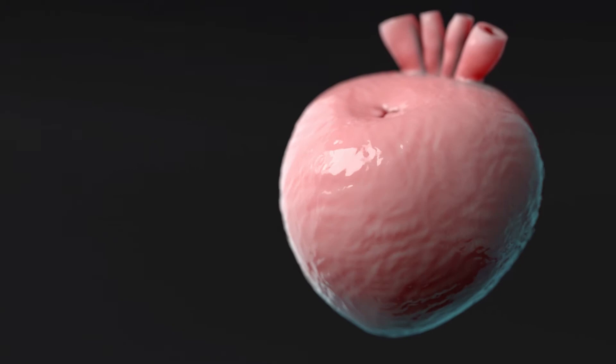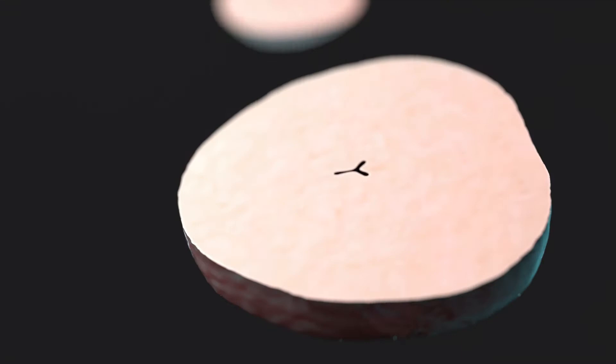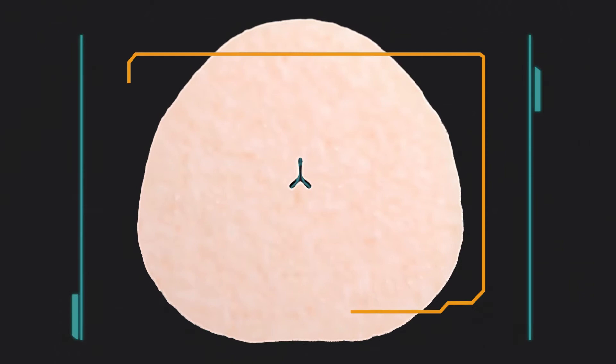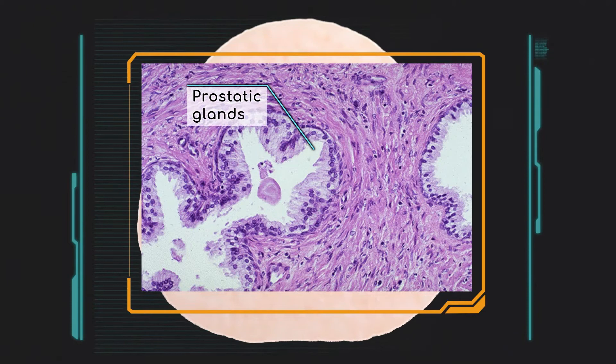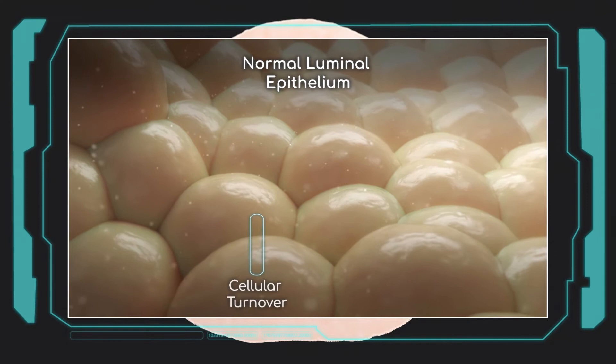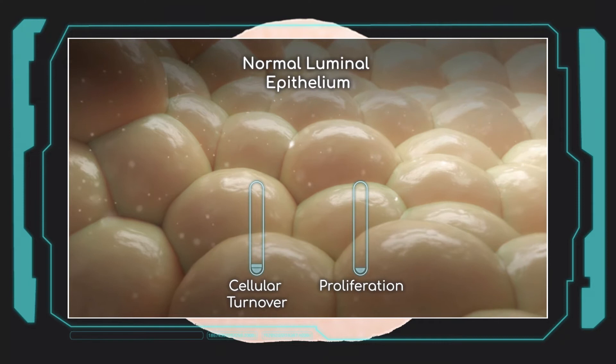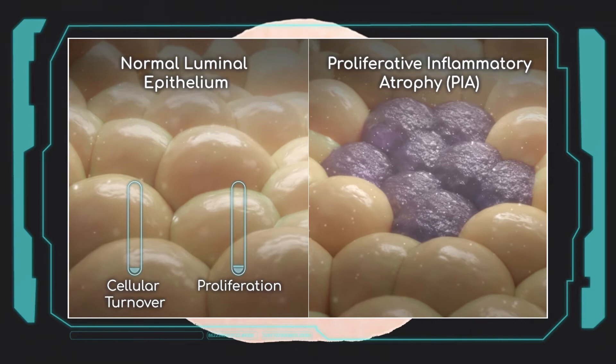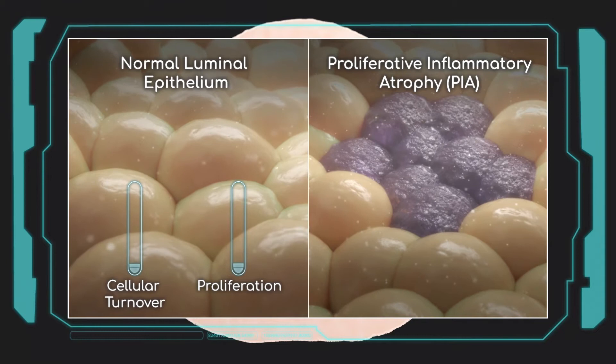Studying the histology of the prostate offers pathologists valuable insights into the possible pathogenesis of prostate cancer. Within the prostate are small compound tubular alveolar ducts known as prostatic glands. These glands are made of pseudostratified columnar luminal epithelial cells and simple squamous basal cells surrounded by a stroma of connective tissue and smooth muscle. In a normal prostate, the glandular luminal epithelial cells have very low cellular turnover and rarely proliferate. Inflammation in the prostate is associated with the development of proliferative inflammatory atrophy (PIA), a proposed precursor lesion to prostate cancer. Unlike normal prostatic epithelial cells, luminal cells involving PIA have high cellular turnover and are highly proliferative.